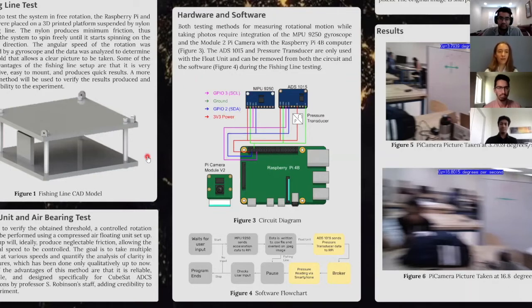To see how the software works, we can look at this flowchart down here. When the user is ready to start, the gyroscope will send acceleration data to the Raspberry Pi. That data will then be written to a CSV file, which we could then analyze later in Excel, and then that same data is annotated onto a photo that the camera takes at the same time. This way, we can directly compare how the rotational speed affects the motion blur of the photos. At this point, the flowchart sort of splits to indicate the difference between the float unit software, which you see here in yellow, and the fishing line software, which just continues in the gray part.